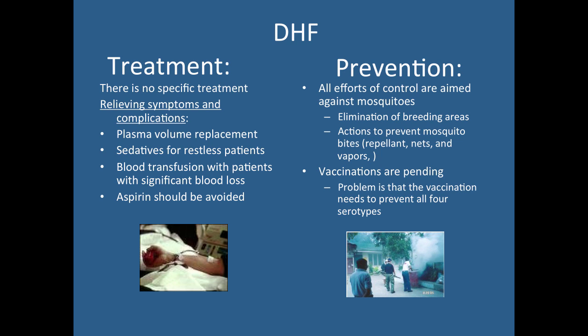The focus should be on prevention strategies. Key questions are: what can you do to eliminate the breeding areas of mosquitoes, and what actions can prevent them from biting? Vaccines are hopefully coming in the next five years, but currently management relies on preventing mosquito breeding, killing mosquitoes, and preventing bites.